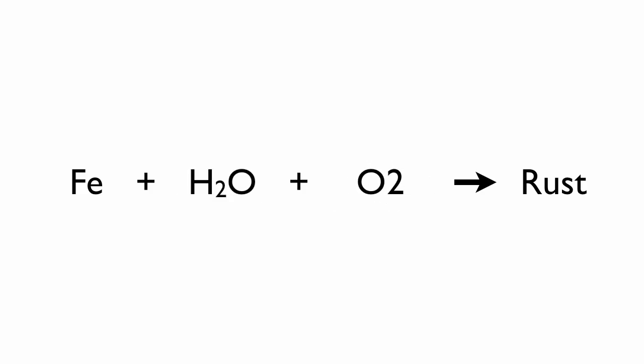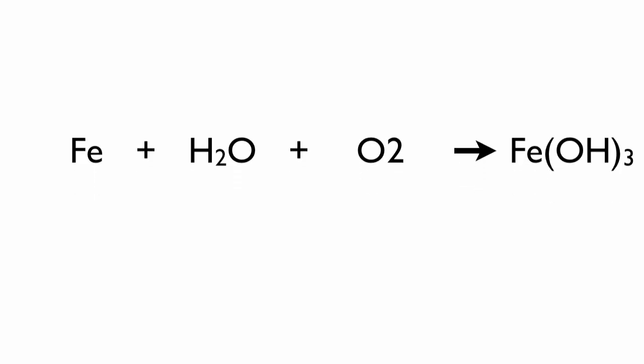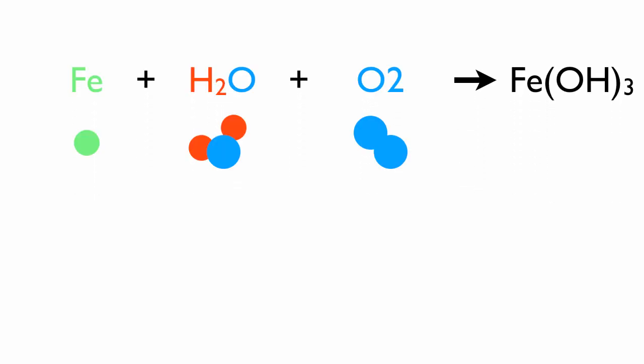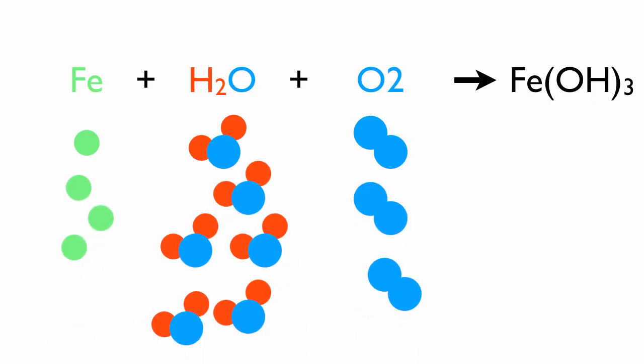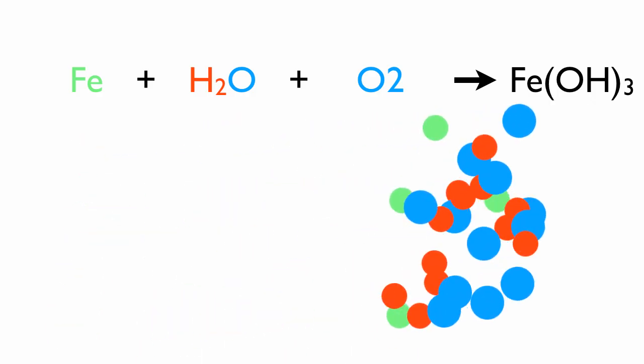Iron plus water plus oxygen yields iron 3 oxide, or rust. In this chemical equation, we start with iron but end up with something brand new.